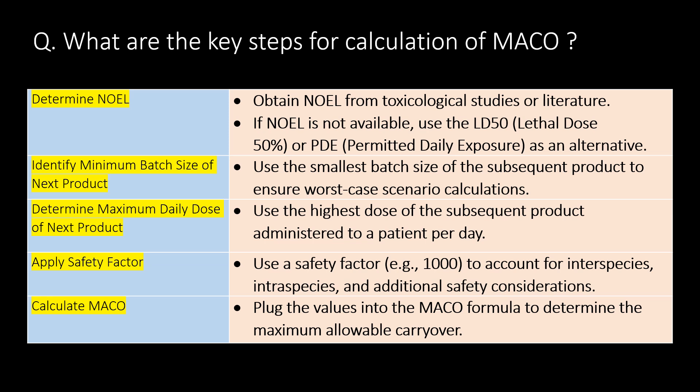Very important question: what are the key steps for calculation of MACO? Step 1 — Determination of NOEL. Obtain the NOEL value from toxicological studies or literature. If NOEL is not available, use LD50 (lethal dose 50%) or PDE (permitted daily exposure) as an alternative.